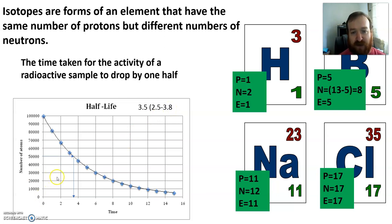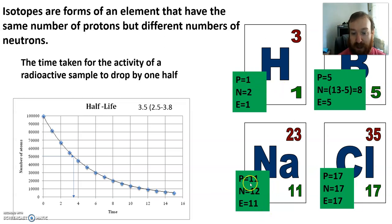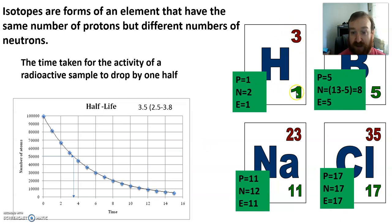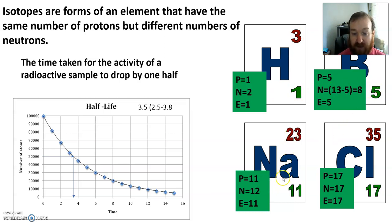For the isotopes we've got one proton, five protons, 17 protons, 11 protons. The proton and electron numbers are the same. For neutrons, we take the big number and subtract the little number from it: 3 take away 1 is 2; 13 take away 5 is 8; 23 take away 11 is 12; 35 take away 17 is 17.